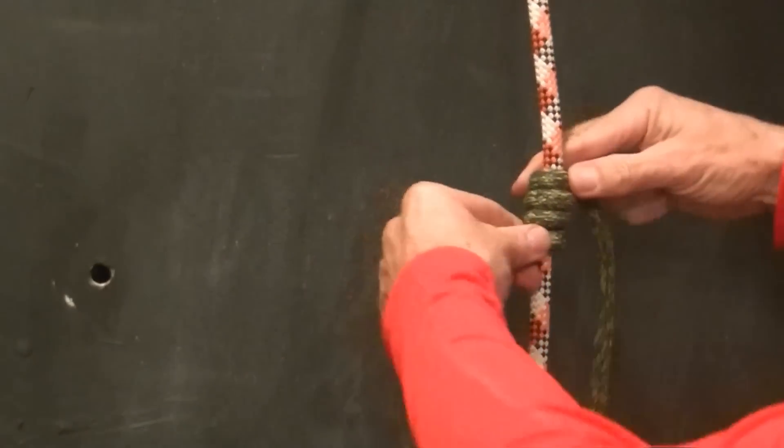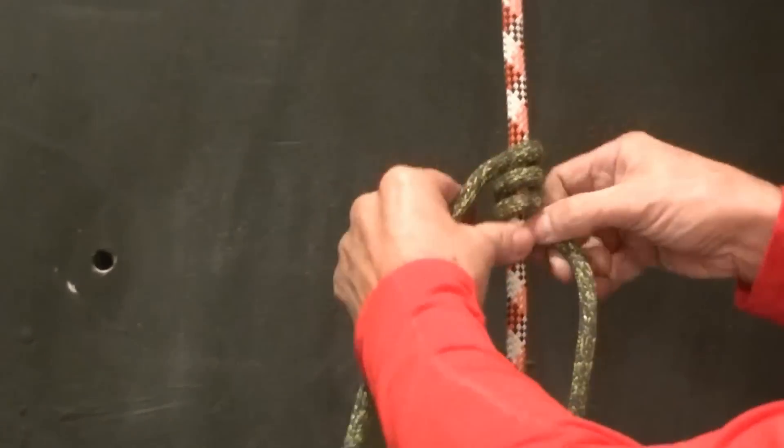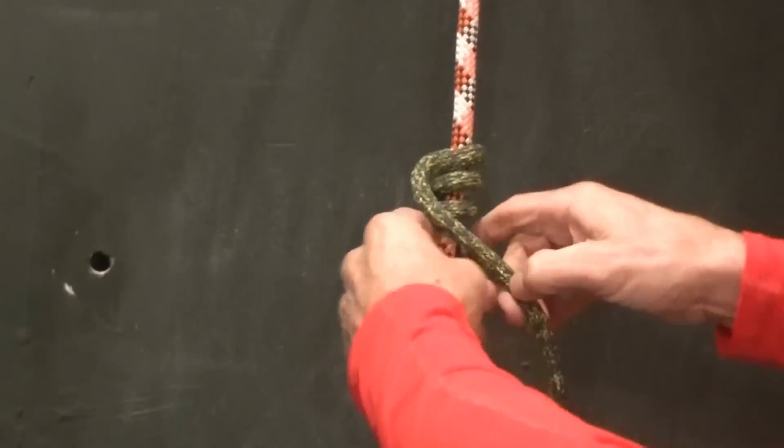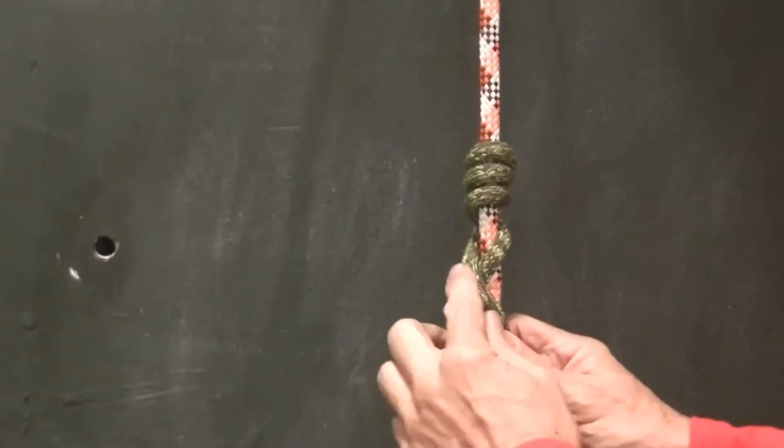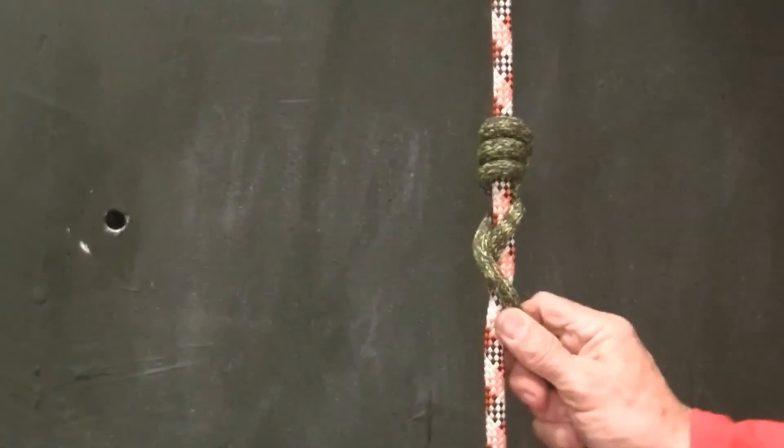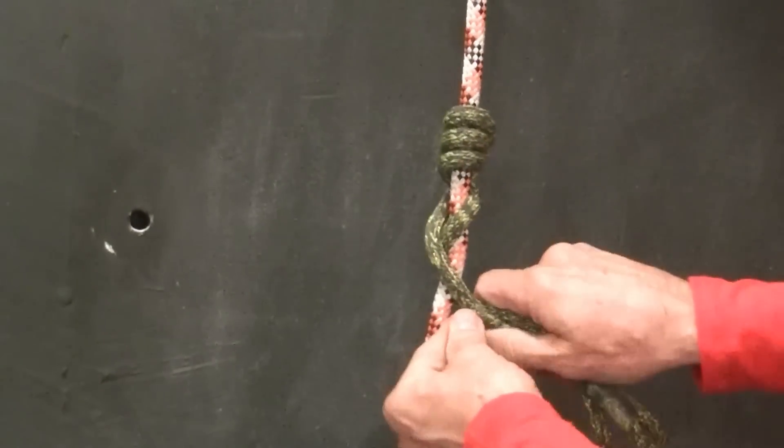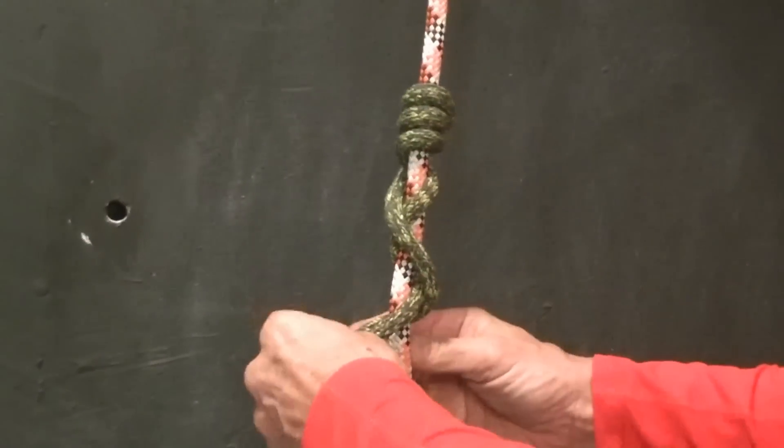So there's our three wraps. Bring it around and we'll cross it once and bring it around the back side to secure it. So now we have our first braid and our three wraps. Again, we'll cross and secure it.